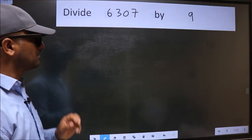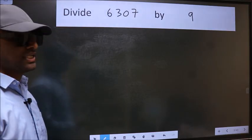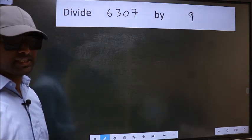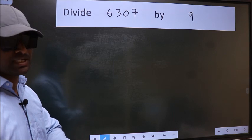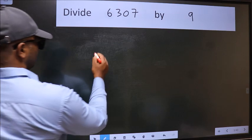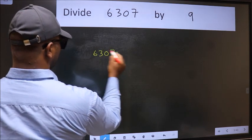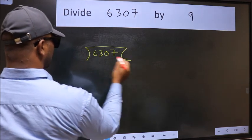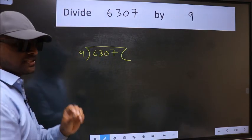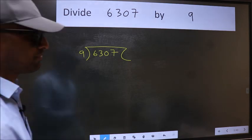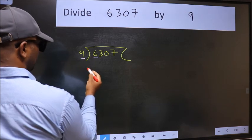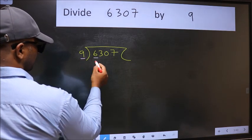Divide 6307 by 9. While doing this division, many do this mistake. What is the mistake that they do? I will let you know. But before that, we should frame it in this way: 6307 and 9 here. This is your step 1.